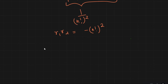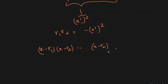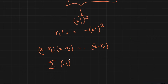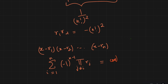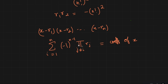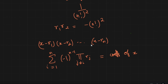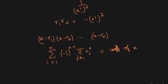We know that for a polynomial (x - r1)(x - r2)···(x - r_N), the coefficient of x equals (-1)^(N-1) times the sum over i of the product of all roots excluding r_i. In our case this coefficient is 0. Let's see what this tells us about r1 and r2.